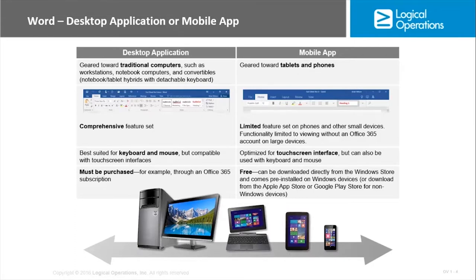With Word, as with many of the other programs, we have a desktop application or a mobile app. When we say desktop application we're talking about a program that gets installed on traditional computers — desktops, laptops, notebook computers, and convertibles, which are laptops that also have tablet capabilities. You get the most comprehensive feature set in the Word 2016 desktop application. It's best suited for keyboard and mouse, though it does have compatibility with touchscreen interfaces.